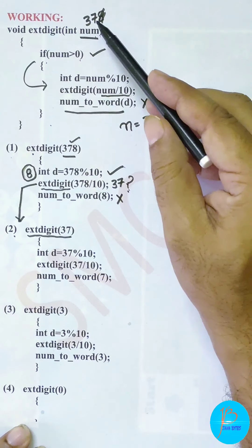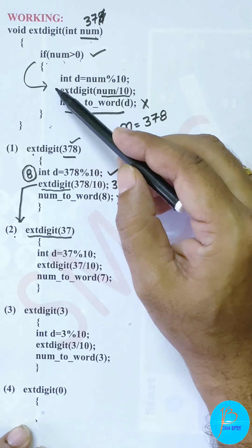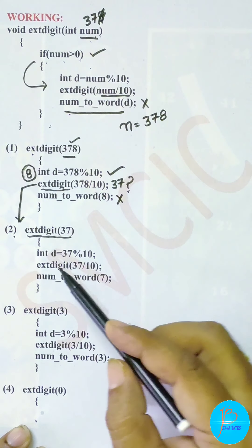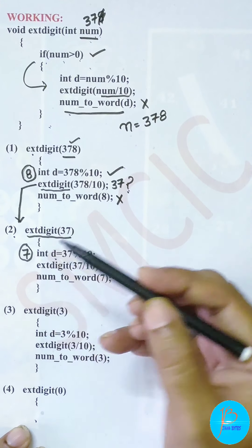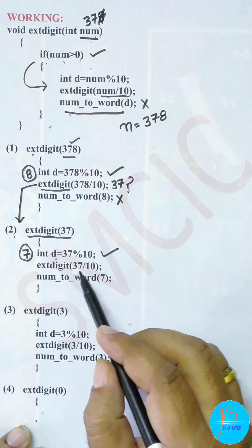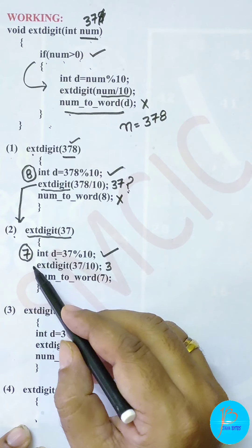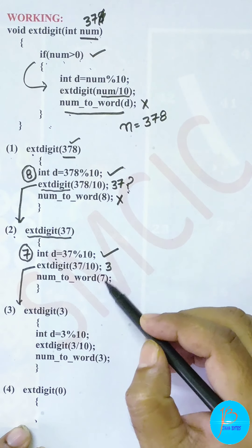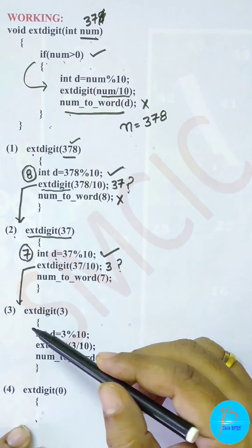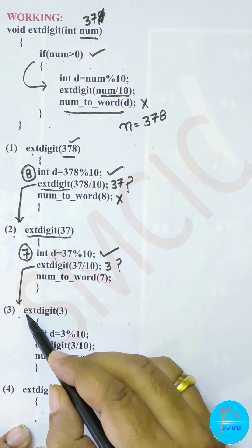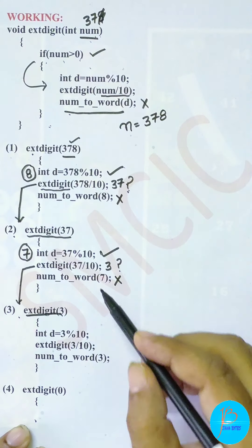In the second copy, extDigit(37) runs. num is 37, which is greater than 0, so again the three lines execute. First line: d = 37 % 10 = 7. Second line: extDigit(37 / 10) = extDigit(3) - third call. Again the third line numToWord has not yet executed. In the third call, extDigit(3): d = 3 % 10 = 3, then extDigit(3/10) = extDigit(0), and numToWord(3) is still pending.